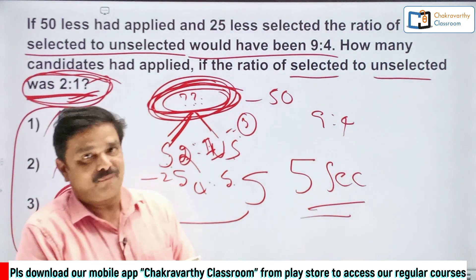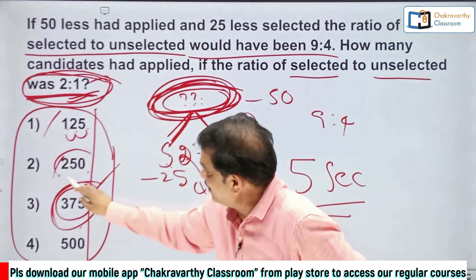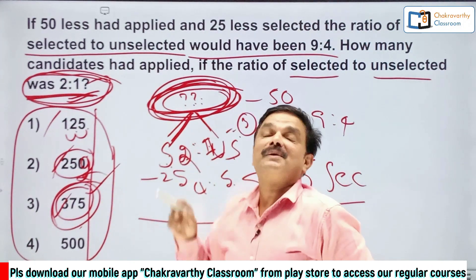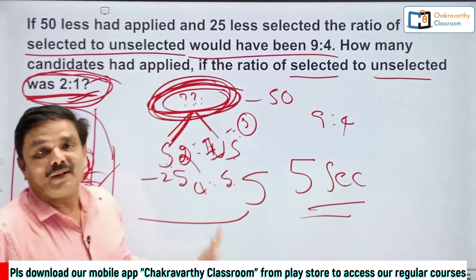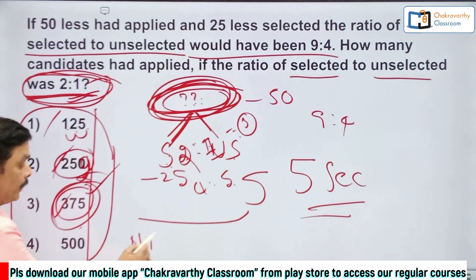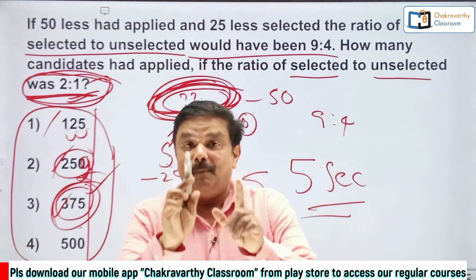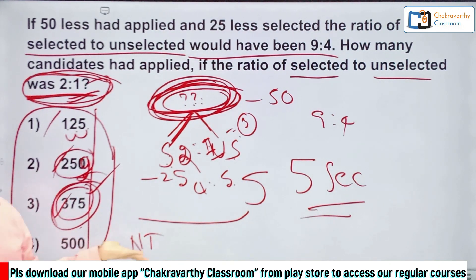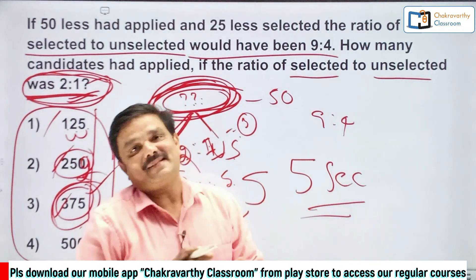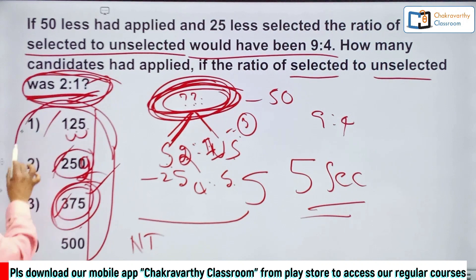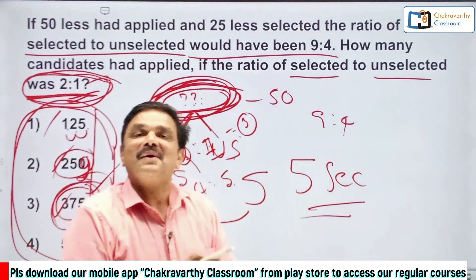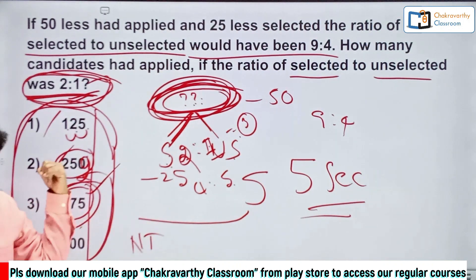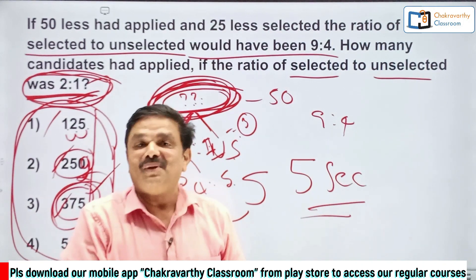But students, we cannot expect this type of figures every time. Sometimes there may be another number that is also divisible by 3, so you cannot rely on that alone. Also, if they give a 'none of these' option, you need to go with the procedure. This 5-second shortcut is very important to try first, but it has limitations.